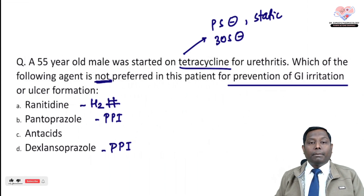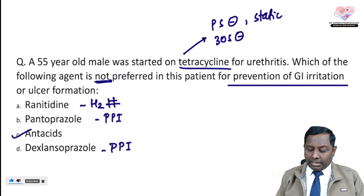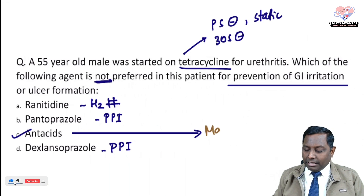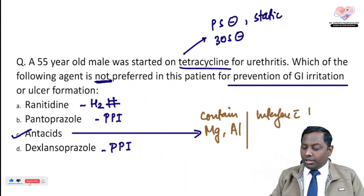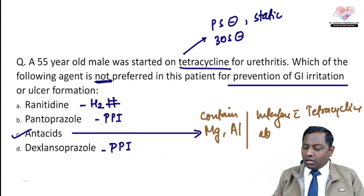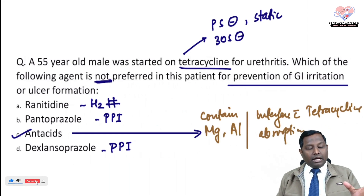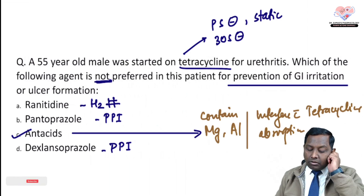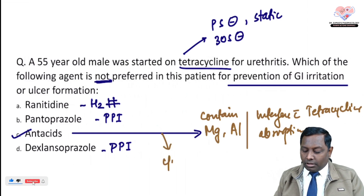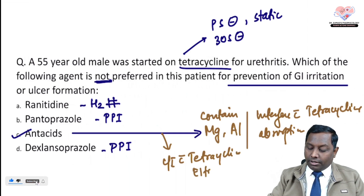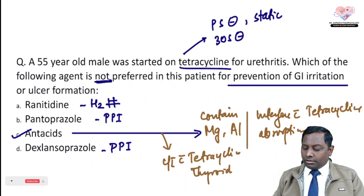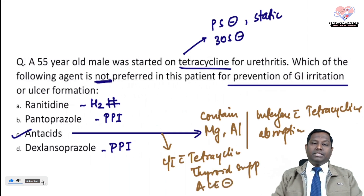Antacids are not given with tetracycline. Antacids mainly contain magnesium and aluminium — like Digene, a common antacid — and these interfere with tetracycline absorption. There should always be a gap of two to three hours. Antacid is contraindicated with tetracycline, and also contraindicated with L-thyroxine (thyroid supplement) and bisphosphonates like alendronate, as it interferes with their absorption.